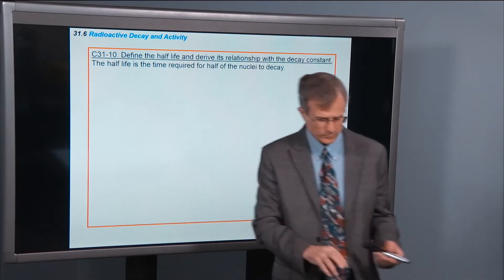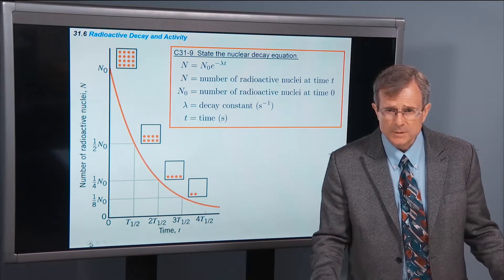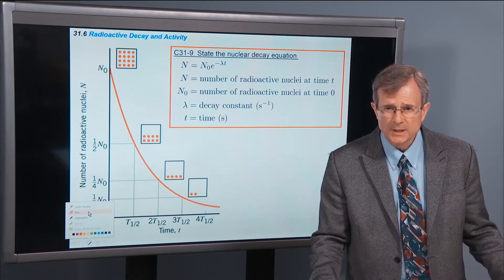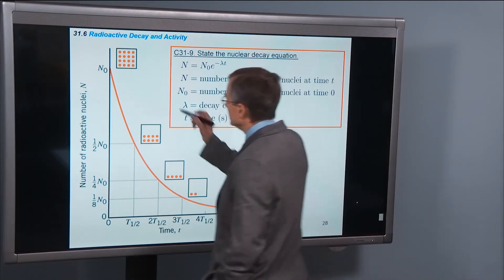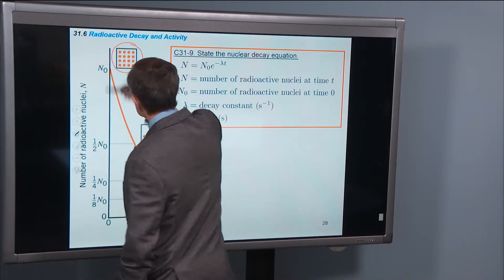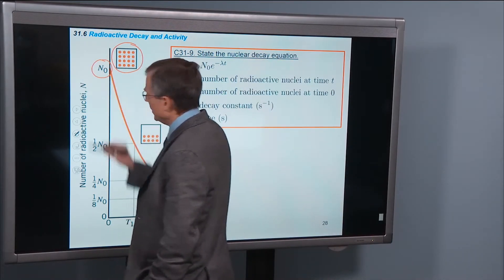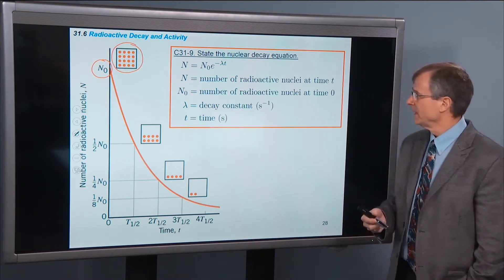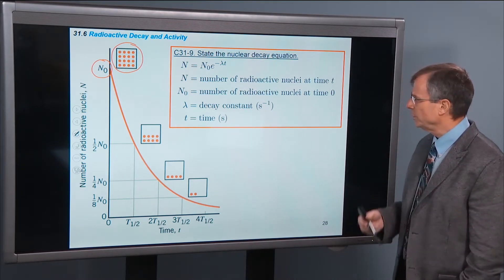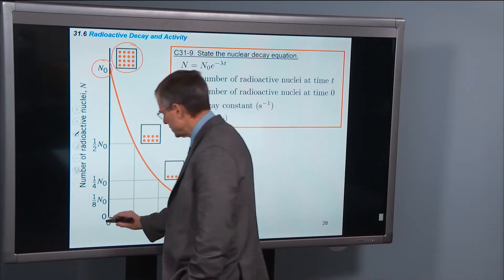16 atoms of a particular radioactive isotope. So 4 times 4 is 16, and that's represented by this number N-naught. That's the initial number of radioactive nuclei at time T equals 0.